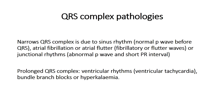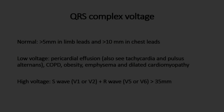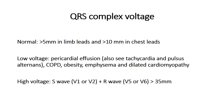Regarding QRS complex voltage: in the limb leads, the QRS amplitude should be greater than 5 millimeters. In the precordial leads, which are closer to the heart, the QRS complexes should measure greater than 10 millimeters.